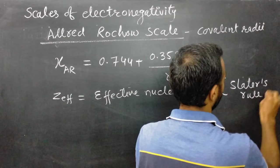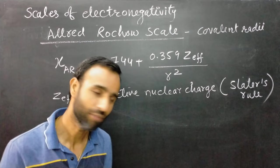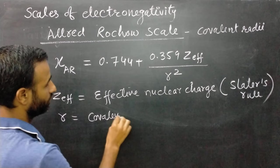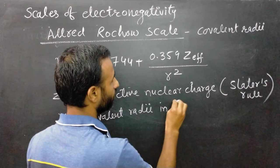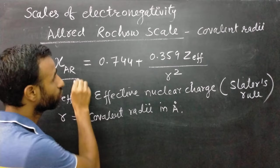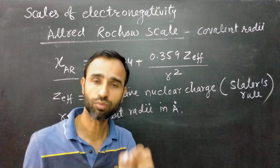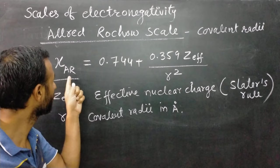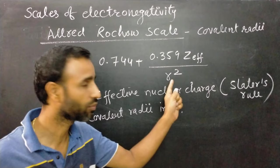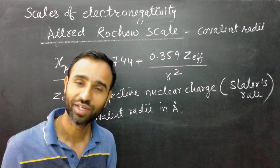You can watch the previous video for Slater's rules. R is the covalent radius of that particular atom, measured in Angstroms. According to the Allred-Rocco scale, an atom with high effective nuclear charge and small covalent radius is more electronegative, since electronegativity is proportional to effective nuclear charge and inversely proportional to the radius. This is why fluorine has the highest electronegativity in the periodic table.